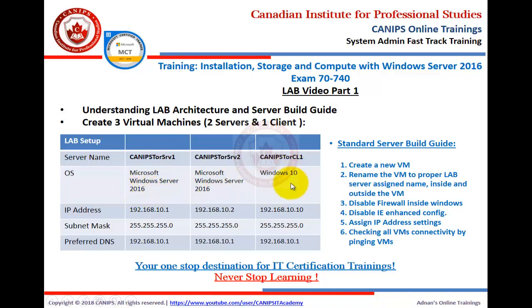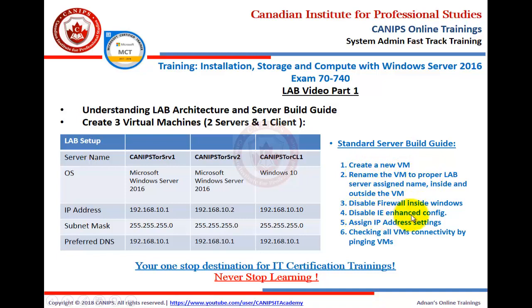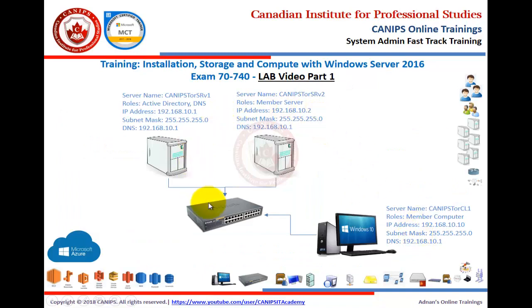The IP addresses follow this scheme: the first server is .1, second is .2, and the third is .10. The DNS will be the same for all of them. Once we prepare a server, we follow these standard server guidelines: create the VM, rename it to the proper name, disable the firewall, disable IE Enhanced Security, assign the IP address, and then check all VM connectivity.